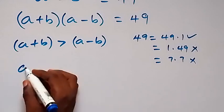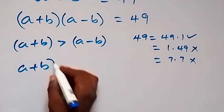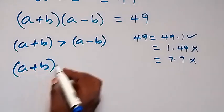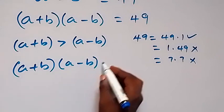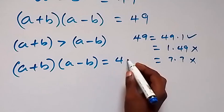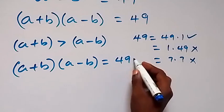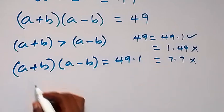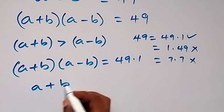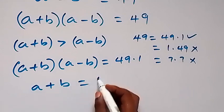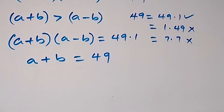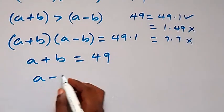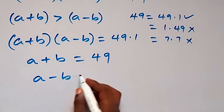This means we write (a + b)(a minus b) = 49 times 1, which implies a + b = 49 and a minus b = 1.